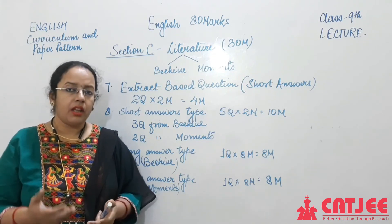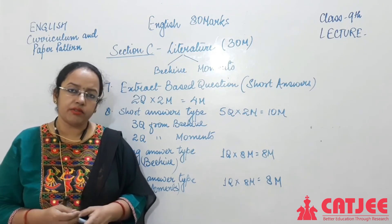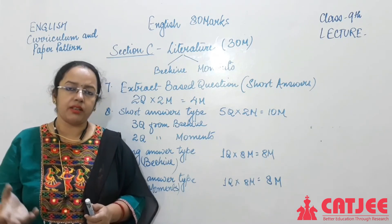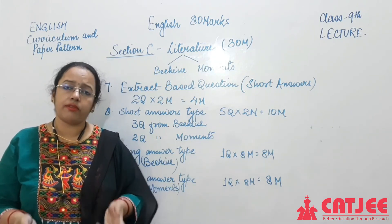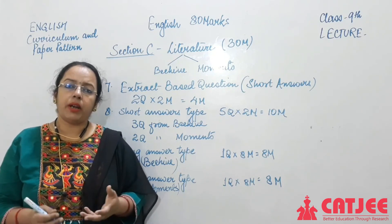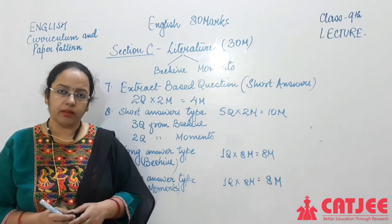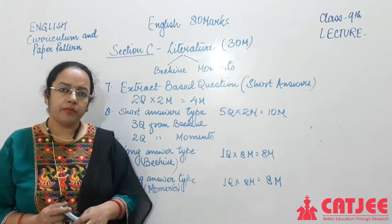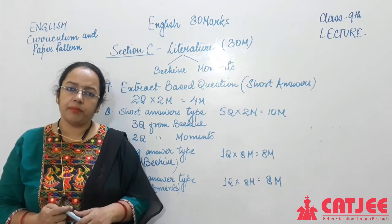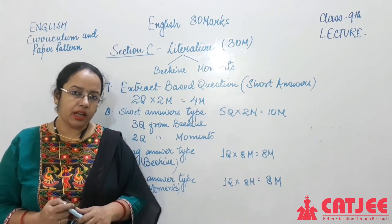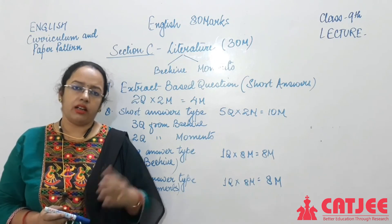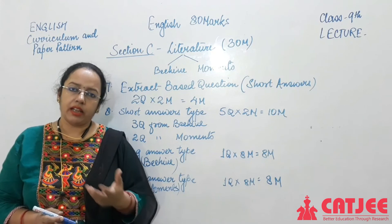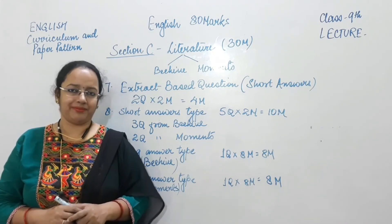So this is the complete paper pattern for class 9th English. We will take up one section per class in later lectures — one dedicated to Writing, one to Grammar, and one to Reading. In the next class we will take up the first poem of the book Beehive. Go through this pattern, understand how you have to write. Take care and be safe, bye bye.